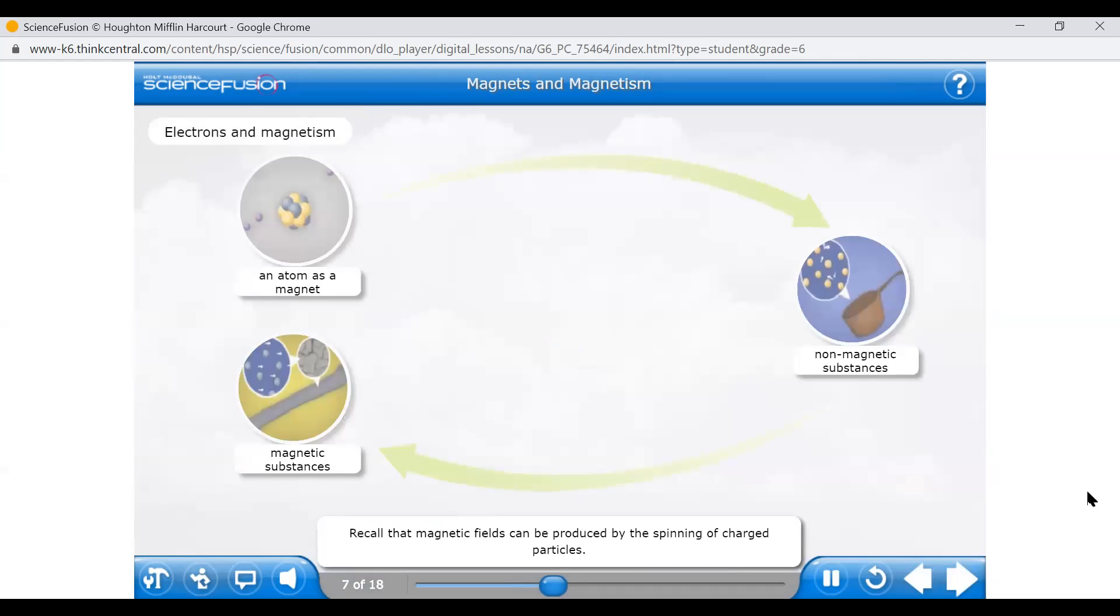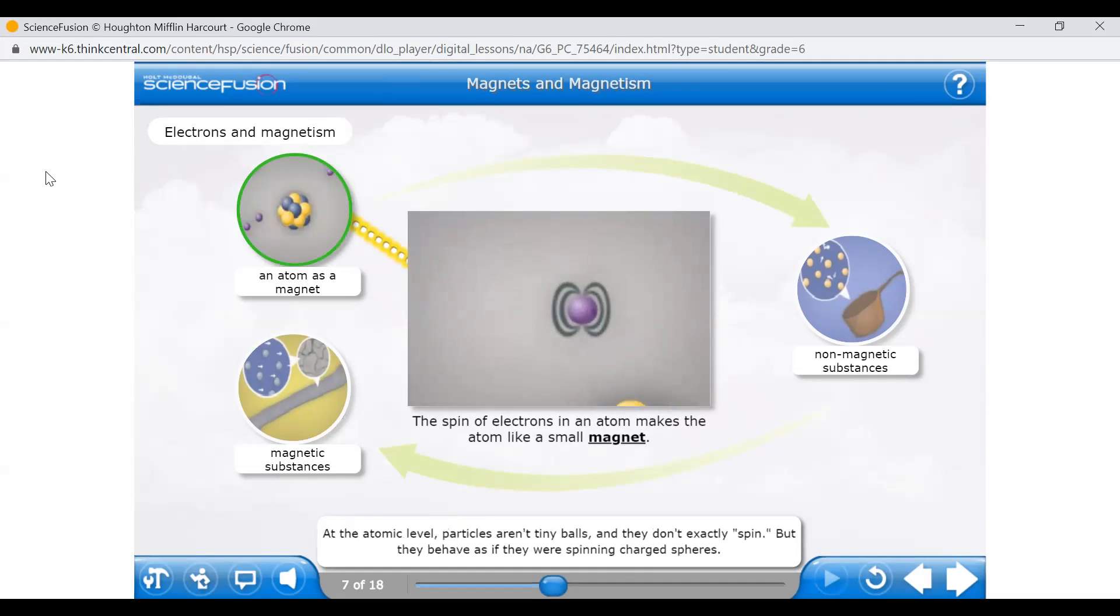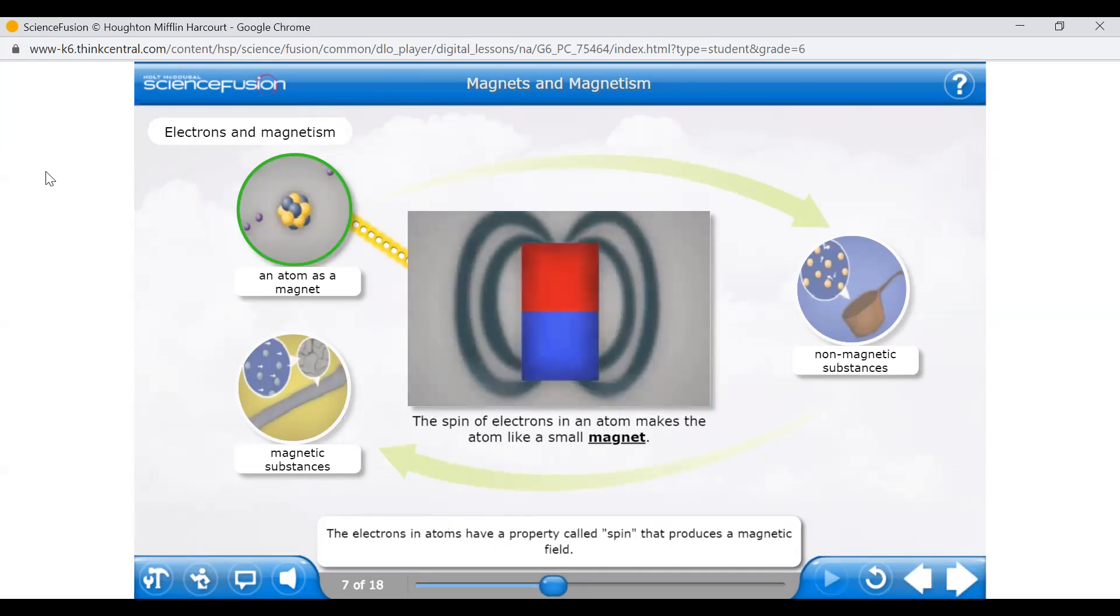Magnets can attract iron. Recall that magnetic fields can be produced by the spinning of charged particles. How does this cause a magnet to form? Click each image to find out more about how magnetic fields are generated and what makes certain materials magnetic. At the atomic level particles aren't tiny balls and they don't exactly spin, but they behave as if they were spinning charged spheres. The electrons in atoms have a property called spin that produces a magnetic field. The electrons in each atom give the atom a magnetic field as if each atom were an extremely tiny bar magnet.